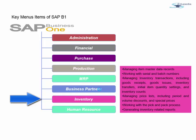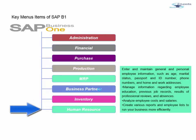Inventory is the most important part of any ERP. It involves maintaining item master data records, working with serial and batch numbers, managing inventory transactions such as goods receipt, goods issue, inventory transfer, initial item quantity settings, and inventory count. Goods receipt and goods issue are useful when there is a mismatch between actual and expected quantities. It also covers managing price lists including period and volume discounts, special prices, and pick-and-pack processes.